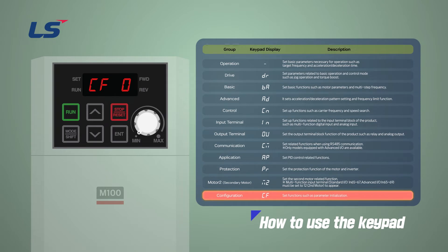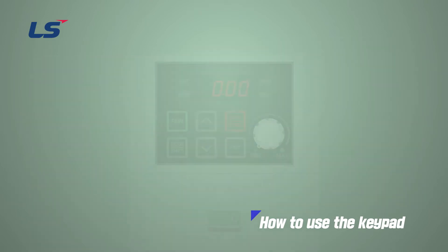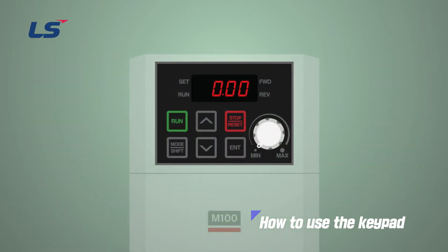If you press the Mode Shift key one more time in the last group, you can move to the first operation group. Next, let's see how to move from code to code within a group.